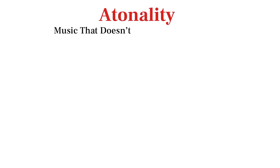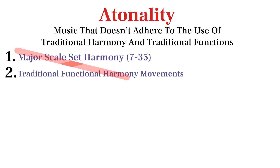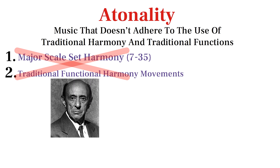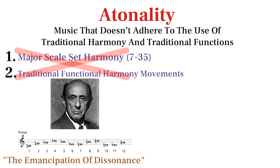I define atonality as music that doesn't adhere to the use of traditional harmony and traditional functions. Atonal music does not fit either criteria of tonal music. Atonal composers like Schoenberg totally obliterated the rules of tonality, trying to liberate dissonance, and would use all 12 tones equally using 12-tone serialism.